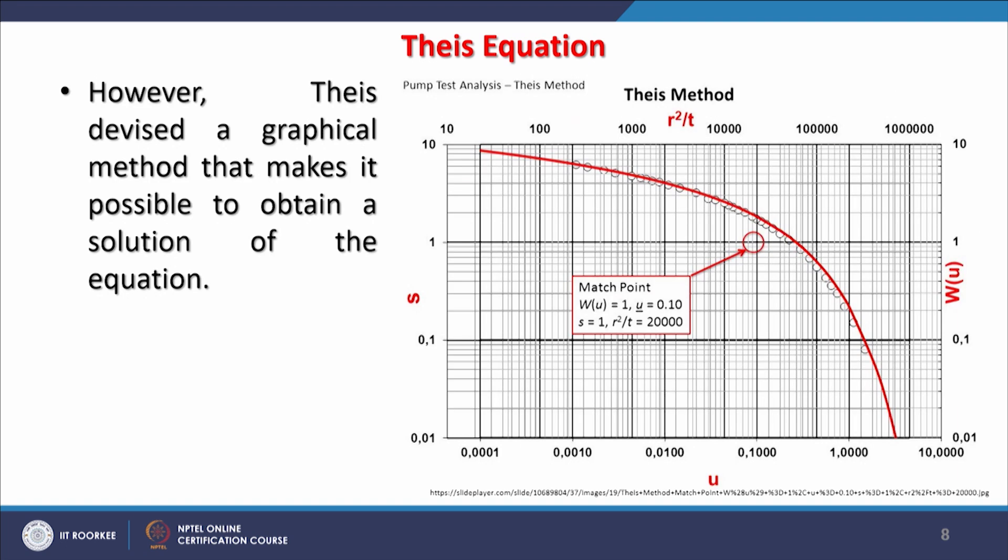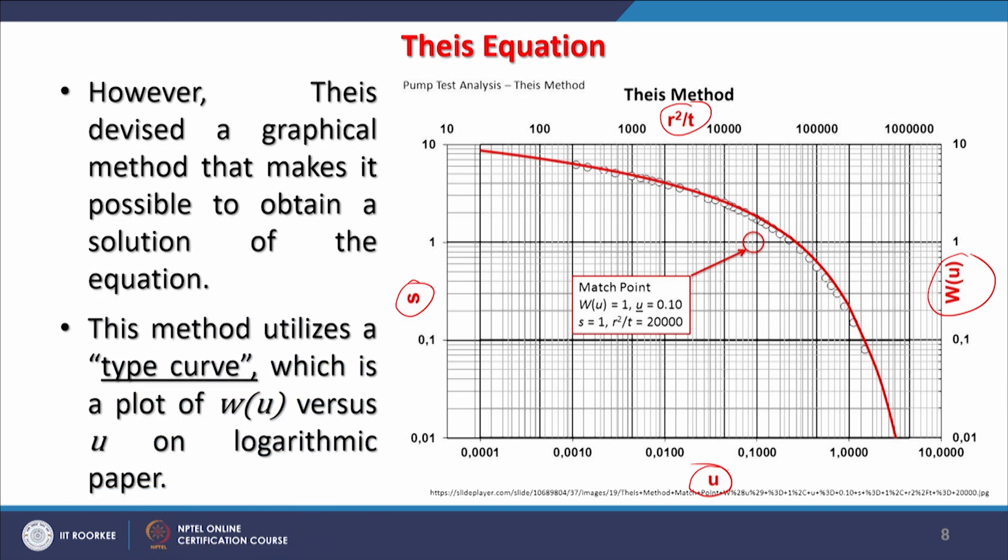The Theis equation devised a graphical method. As earlier we have seen, there are graphical methods which make it easy or possible to obtain solution of the equations, because while pumping is being done we have only limited data. Based on that limited data we can have a graphical method to find out hydraulic characteristics of an aquifer. By this graphical method it becomes possible to find out the solution.